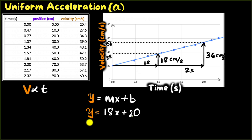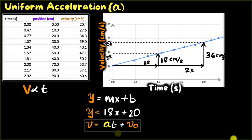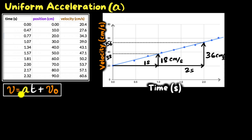Now let's see what these numbers represent. Y represents velocity. What does 18 represent? Look at the units: it's 18 centimeters per second per second — centimeters per second squared — that's acceleration. So 18 represents the acceleration. X represents time. And 20? That's the initial velocity, the velocity when time was zero, which we call v₀. And there we have it — the mathematical model connecting velocity and time. If you know the acceleration and initial velocity, you can use this to predict the future: input any value of time and find the velocity at that moment.